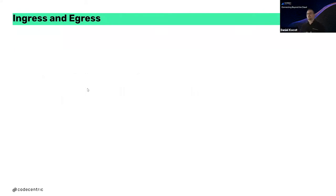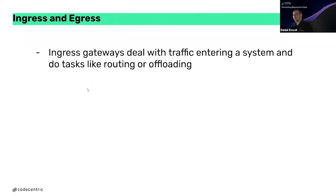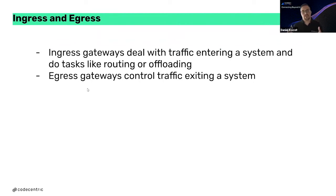In the Kubernetes universe, there is always ingress and egress — something comes into the Kubernetes cluster and something goes out. We can place an API gateway up front as an ingress controller and also as an egress controller. Egress gateways deal with traffic entering the system and handle tasks like routing or offloading, while a gateway as egress controller manages the traffic that exits the system.